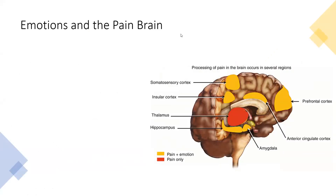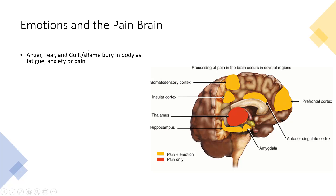I wanted to look at why emotions and pain are linked, because modern medicine struggles with the idea that pain could have an emotional origin. Pain is a very interesting thing — it's actually formed in the brain, which we sometimes refer to as the pain brain. Certain emotions, particularly anger, fear, and guilt or shame, bury themselves in the body in particular ways, and fatigue, anxiety, or pain are often the physical symptoms that result.